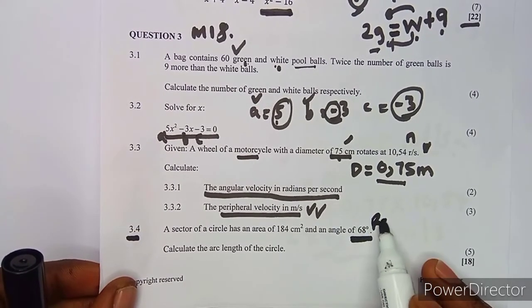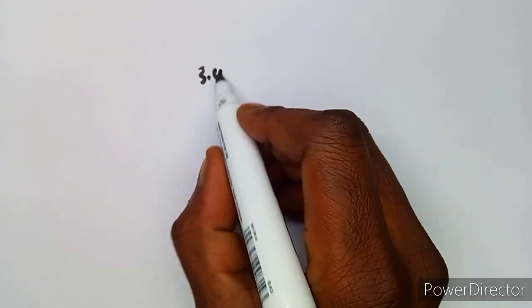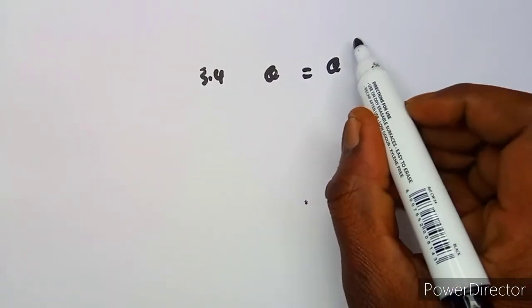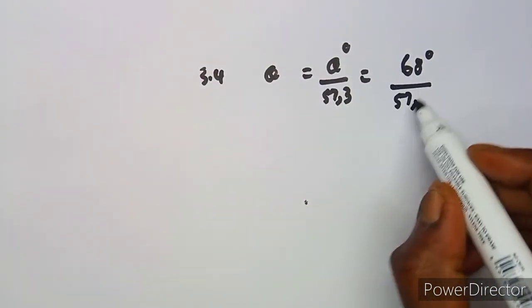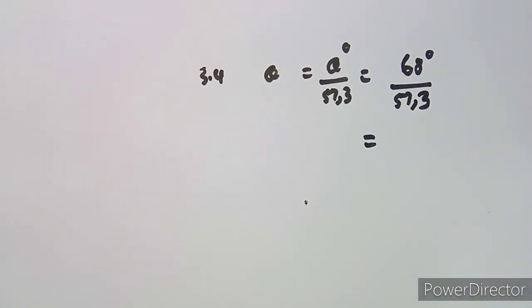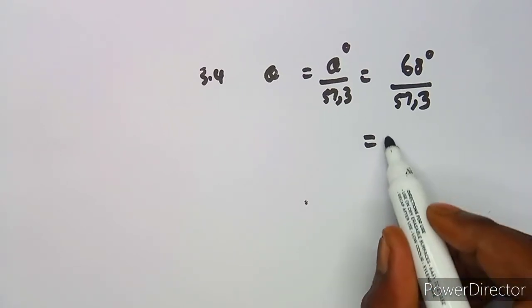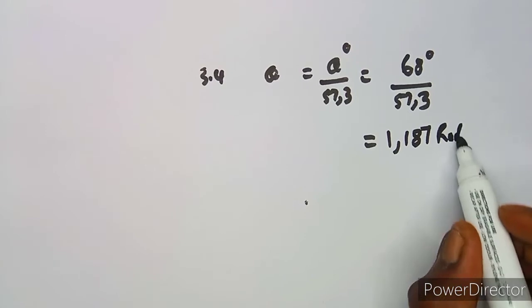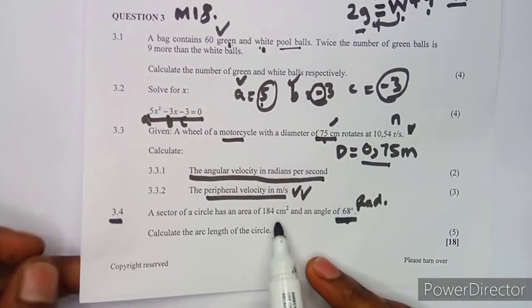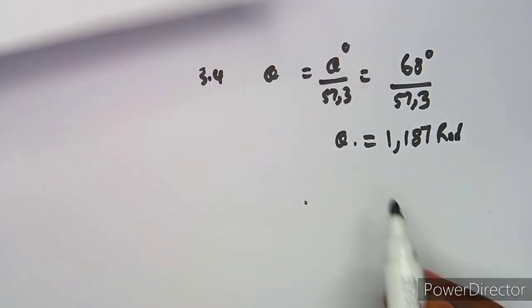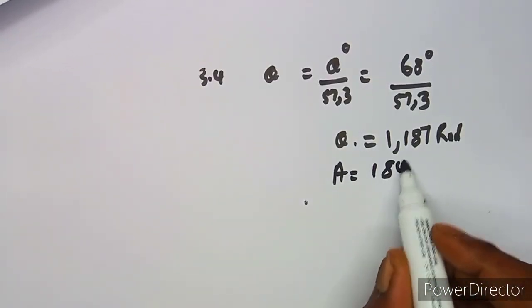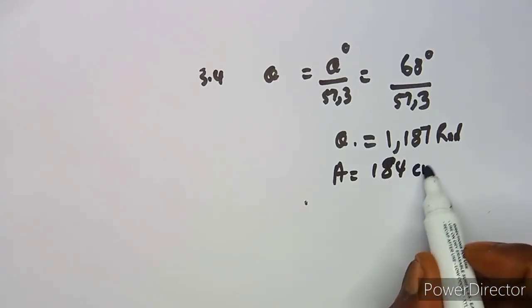First, convert the angle to radians since all sector formulas require radians. Using θ(rad) = θ(degrees) / 57.3: θ = 68 / 57.3 = 1.187 radians. The area given is 184 square centimeters.